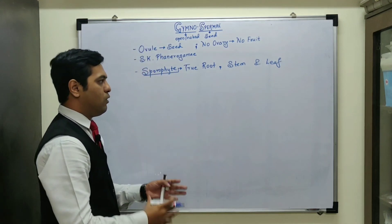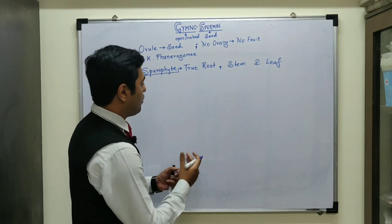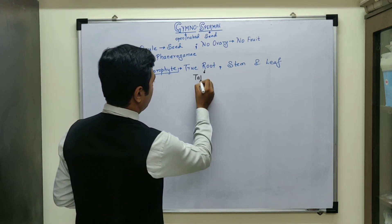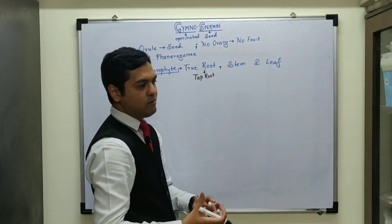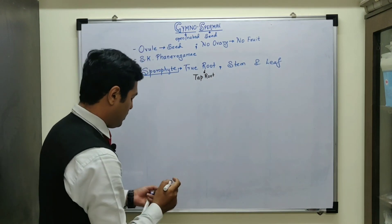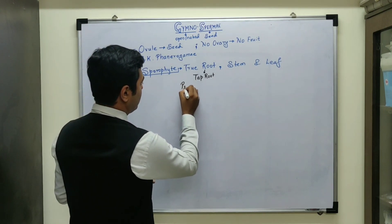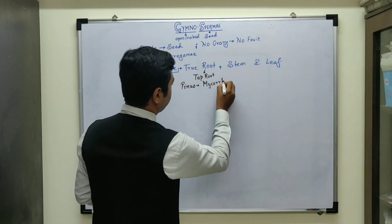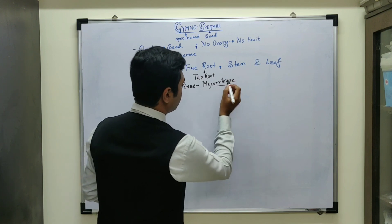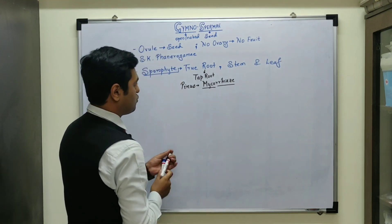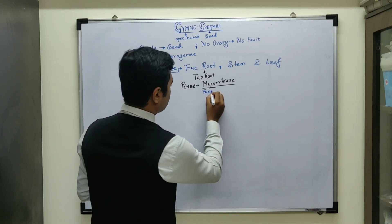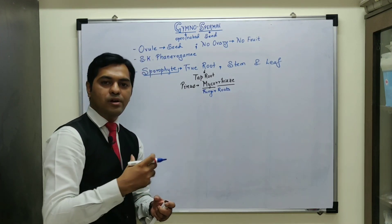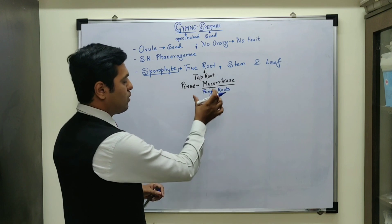So gymnosperms have a well-differentiated plant body. When we discuss about the roots in Gymnosperme, mostly they have presence of a tap root system. Tap root means a true root which develops specifically from the radicle. Apart from this, it has been observed in certain plants — for example in Pinus — that the root is known as mycorrhizae. The term rhizae means root and myco means there is association with a fungus. So there is fungal association with the roots of Pinus, which helps in the fertility of the soil.